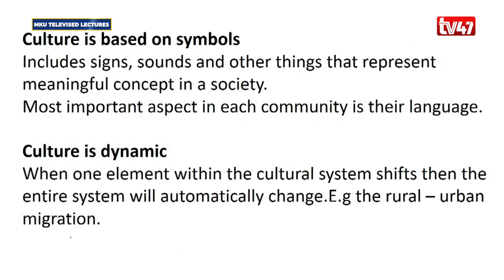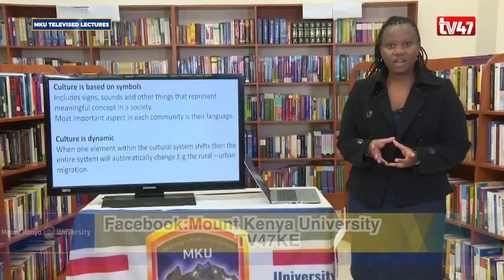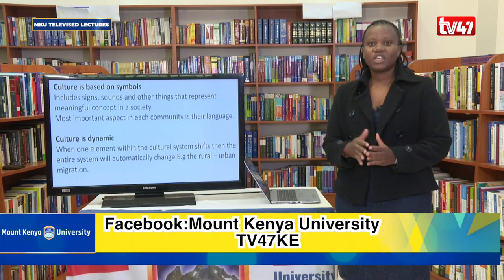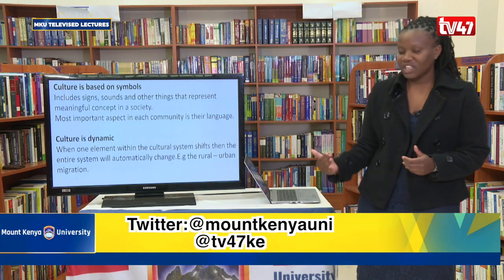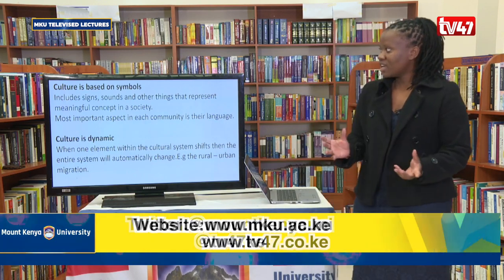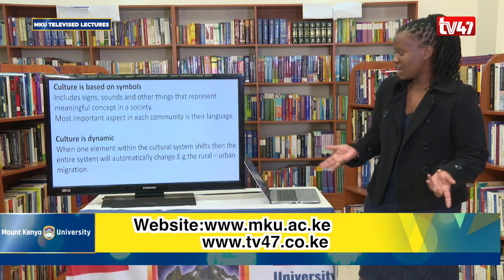Number three, culture is based on symbols which include signs, sounds and other things that represent meaningful concepts in a society. The most important aspect in each community is their language. Language is very unique in each community — in Kenya we have 42 tribes, all speaking their specific and unique language. The Luo can only communicate with the Luo, the Maasai with the Maasai, the Kalenjin with the Kalenjin.